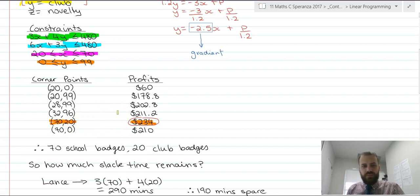So the maximum profit is made at 70 school badges, and it's made at 20 club badges. So that's maximum profit. Now, $234 is good, but we can make a little more if we build some novelty badges in our slack time.